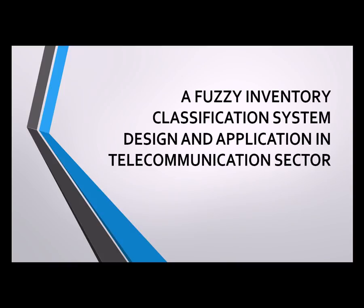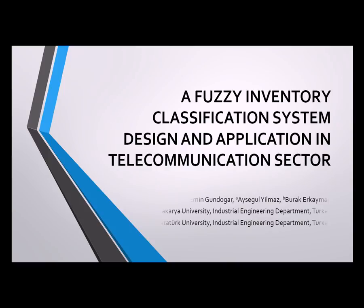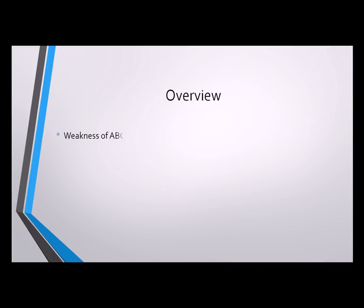This study involves a fuzzy inventory classification system design and application in the telecommunication sector, obtained by the comparison of two methods for inventory classification. Seeking an alternative method for inventory control arises because of the weakness of the ABC classification system. Fuzzy clustering Siemens method suggests a solution for this weakness. For 45 stock items of a telecommunication company, ABC and Siemens methods are applied separately, and results are compared in terms of stock clusters and numbers.